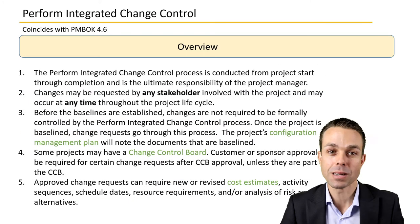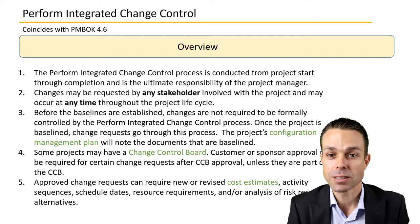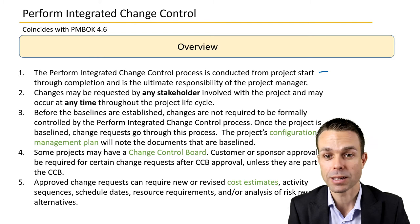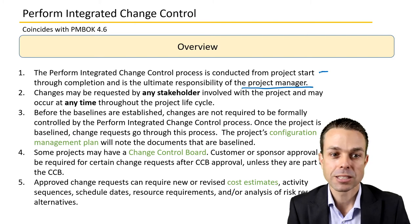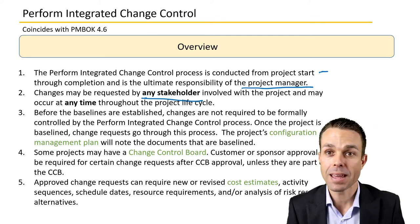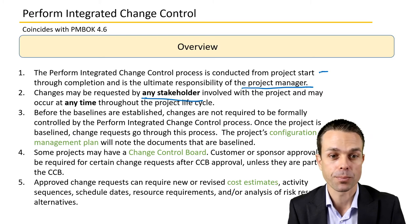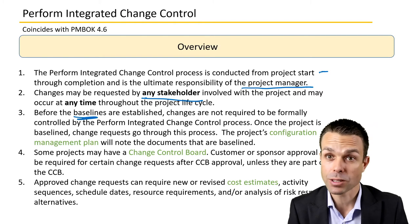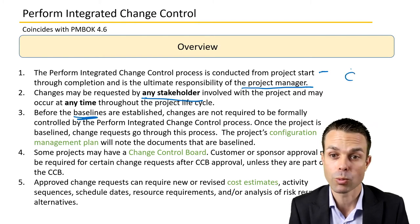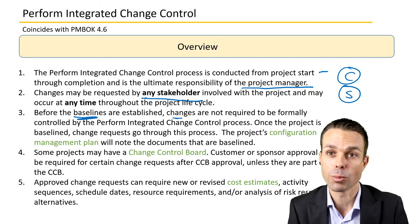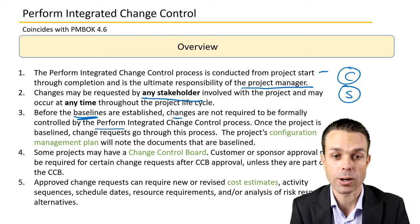Here's an overview of Perform Integrated Change Control. First of all, it's conducted from start through to completion and is the ultimate responsibility of the project manager. Changes can be requested by any stakeholder involved with the project, and may occur at any time throughout the project lifecycle. Before baselines are established — before something is locked in place at a certain point in time, like the cost or the schedule — changes don't have to go through the formal change request or the Perform Integrated Change Control process.